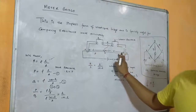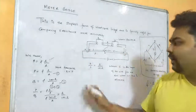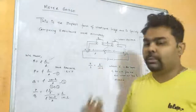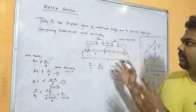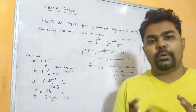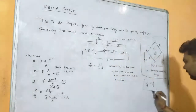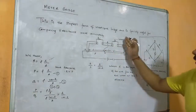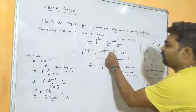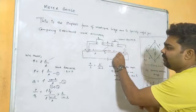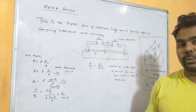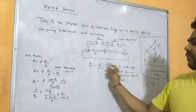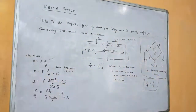If the balancing length l is 45, then 100 - l is 55. With R known from the resistance box, we cross-multiply to get the value of unknown resistance S. In summary, the meter bridge is the practical application of Wheatstone bridge using the balanced condition P/Q = R/S. We slide the jockey on the meter wire, find the balancing length l, and calculate S = R*(100 - l)/l.